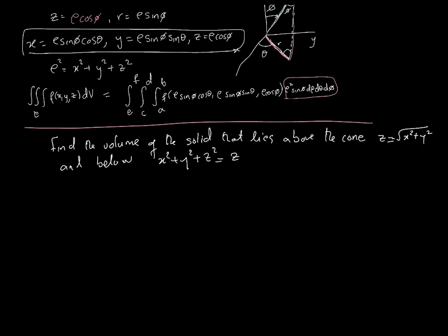The first example: find the volume of the solid that lies above the cone z = √(x²+y²) and below the sphere x²+y²+z² = z. Without drawing yet, we know this is a cone of some shape, and at the top there will be a sphere. We need to find where they intersect, and finding the radius of the sphere is quite important.